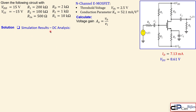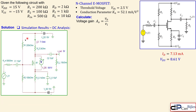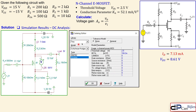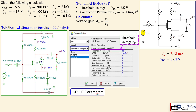Looking at the SPICE simulation for verification, the DC analysis shows ID = 7.30 mA and VDS = 8.61 V, confirming our hand calculations. For transistor M1 in the simulator, we use the level-one SPICE model (also called the Shichman–Hodges model) with a threshold voltage of 2.5 V.